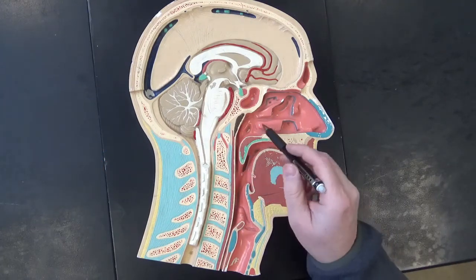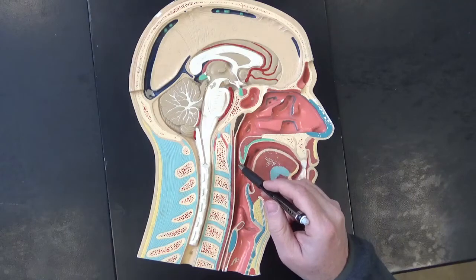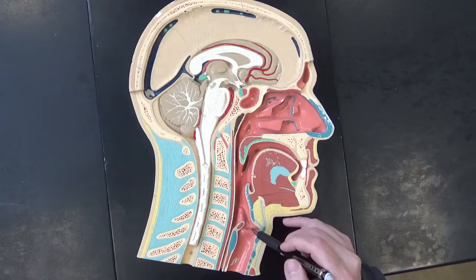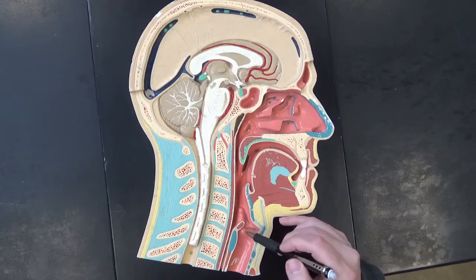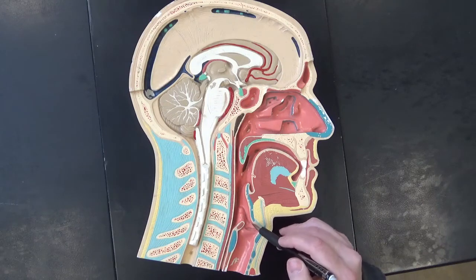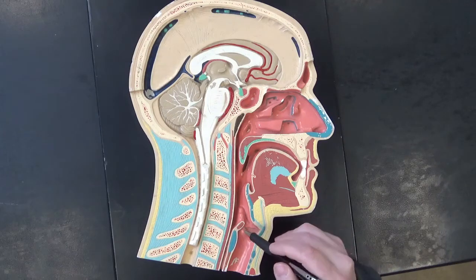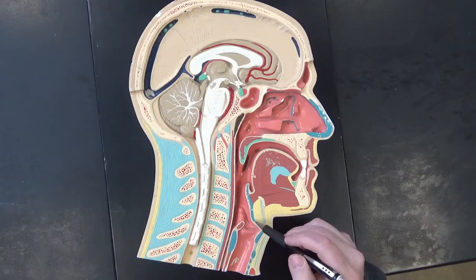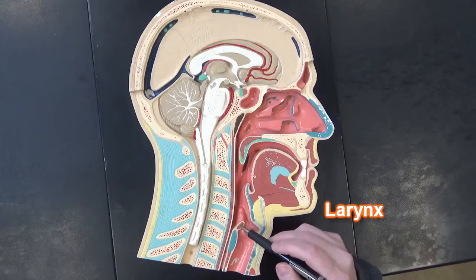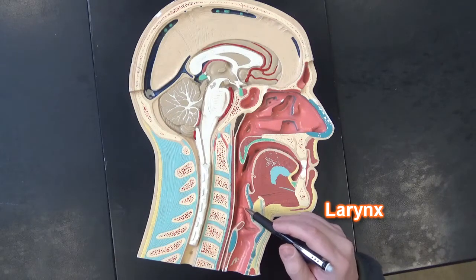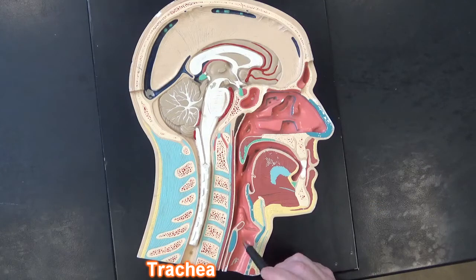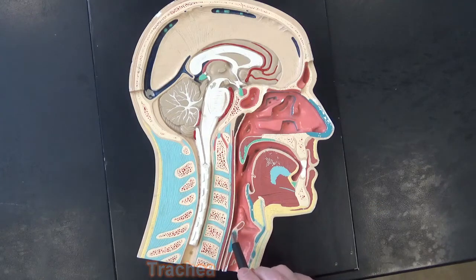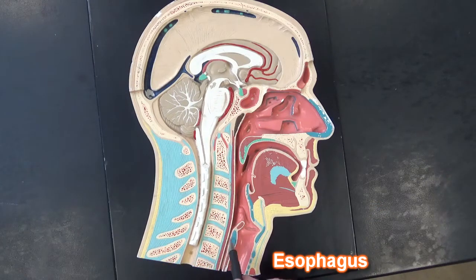Air, when it comes in, is going to travel through this way and go down through the voice box where the vocal cords are. The voice box has a scientific name, and that's the larynx. The air will pass through the larynx and go down into the trachea. This portion here is the esophagus, and that's part of the digestive system.